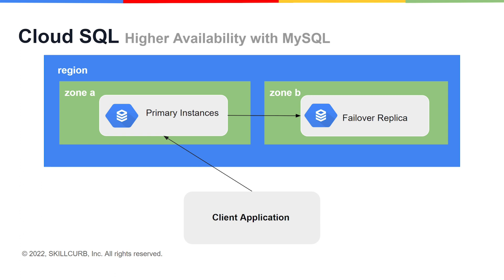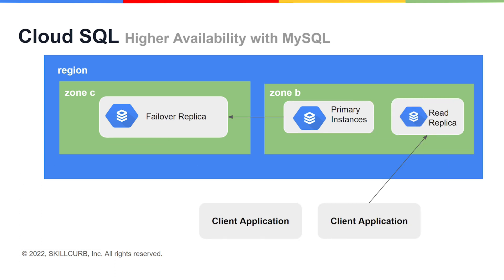The failover replica is then prompted to become the new primary instance. If there is another healthy zone in the region, a new failover replica is then created there and replication continues. You can also create read replicas in the same zones as your primary instance. These are not used for failover and they are accessed separately from the primary instance, but they can be useful for providing extra read capacity to application processes that don't need to write to the database.